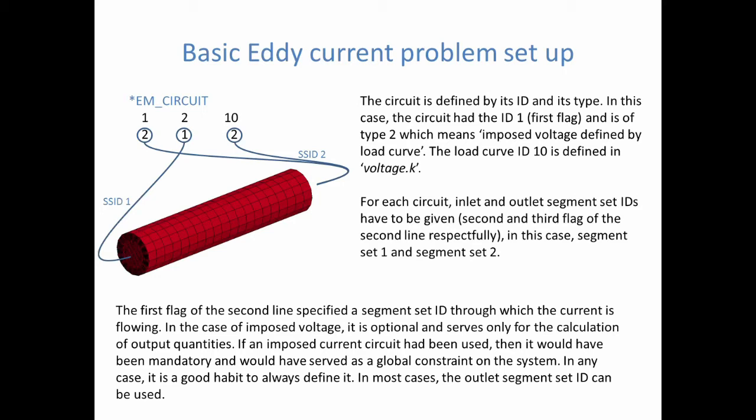And then lastly, I want to draw your attention there, on the first flag of the second line of EM circuit, where you also need to specify a segment ID. What is this segment ID? Well, basically, it says you have to give a segment set through which the entirety of the current will pass, will flow through.